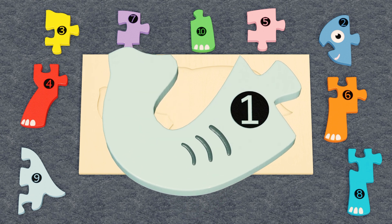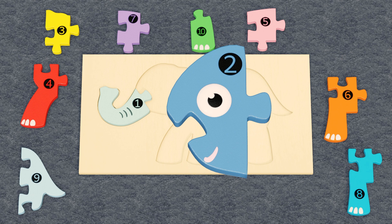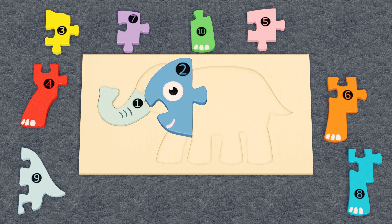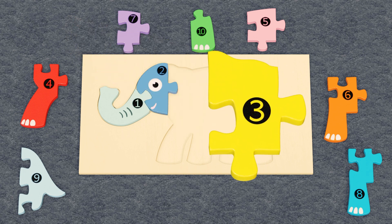Puzzle piece number one is like an elephant's trunk, so put it in front. Piece number two has eye, this must be the head, so put it here. Piece number three is placed next to number two.